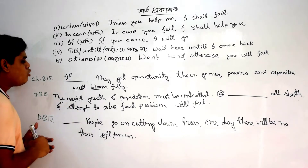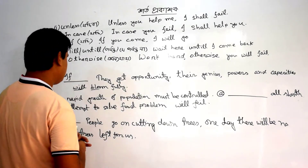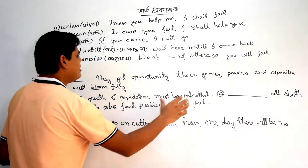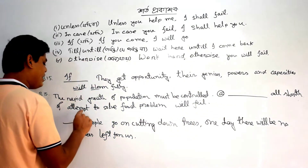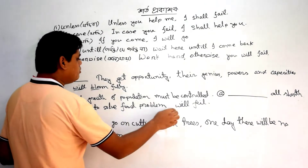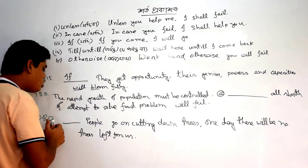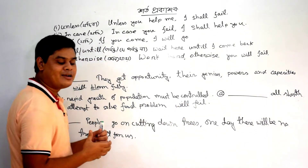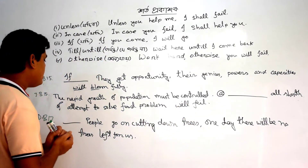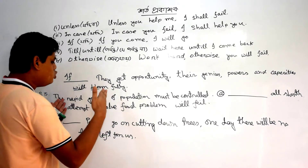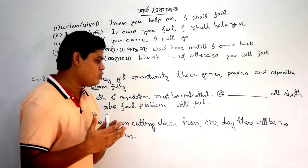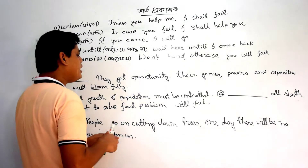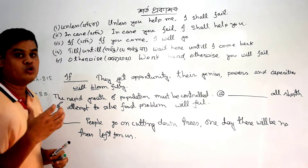The rapid growth of population must be controlled — which means the rapid growth of population must be controlled. All sorts of attempts to solve the food problem will fail. If you have any questions, you will have to answer the questions.